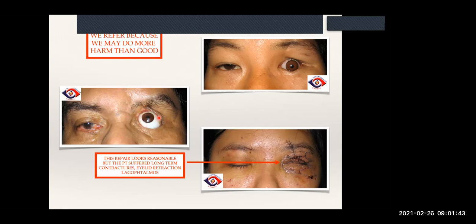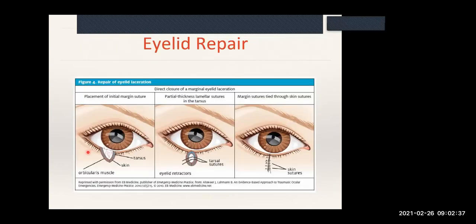Ectropion, entropion, lagophthalmos - these terms mean the eyelid sticks out, the eyelid points in, the eyelid can't close. These occur because we haven't closed it properly. These patients will get recurrent ulcerations, recurrent dryness, recurrent perforations, and eventually lose their eyes - not to mention the disfigurement. So once you have anything that goes through or comes close to that tarsal plate, do not touch it. It needs to be repaired in a very particular manner.